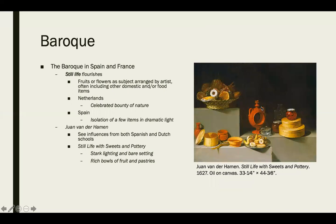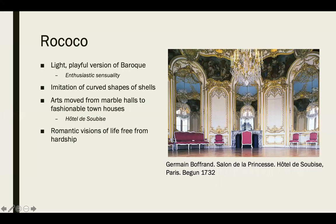Still lifes really flourish in this period — fruits, flowers, and domestic or food items. The Netherlands celebrates the bounty of nature, while Spain isolates a few items in dramatic light. Juan van der Hamen shows influence from both Spanish and Dutch schools in his Still Life with Sweets and Pottery, showing both bounty and a dark isolating background that lets you focus on individual items. Rococo is a light, playful version of Baroque — very enthusiastic and sensual, especially in architecture with ornate gold details, chandeliers, and lush mural scenes.